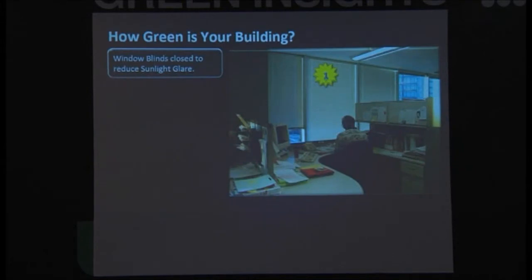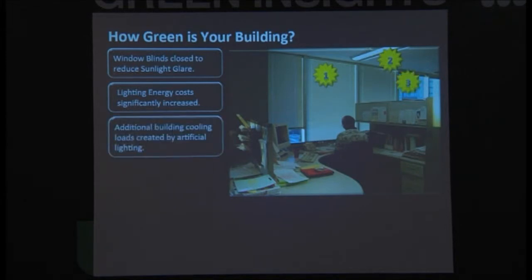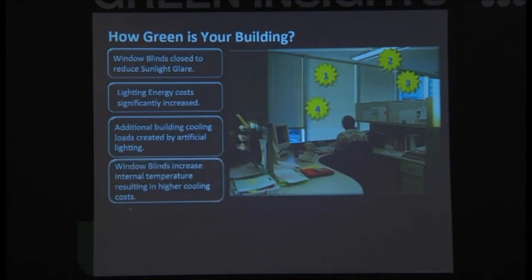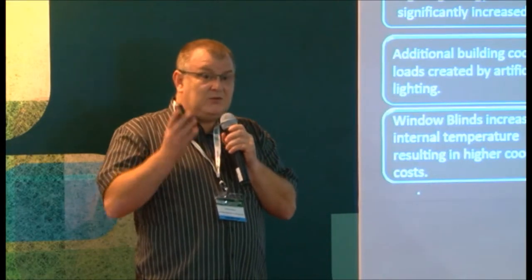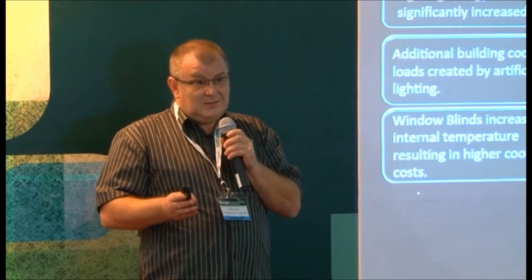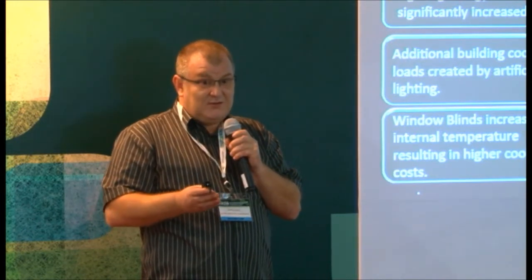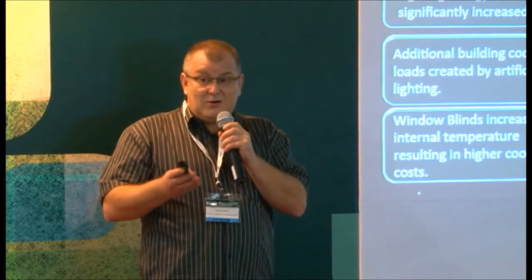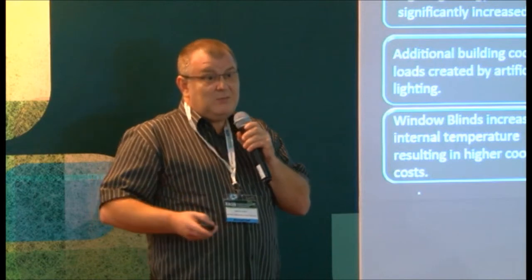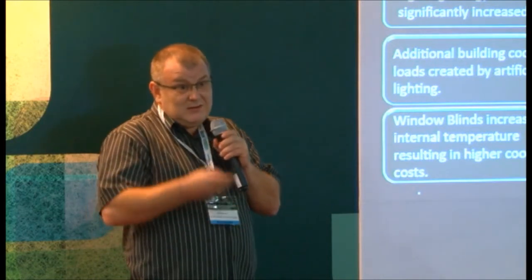So we closed the window blinds to reduce the glare because the glare is the biggest problem. The lighting energy costs are increased because now we've blocked out the sunlight. So there's no point saying this fantastic window allows so many percentage of light transmittance because now we've closed the window blinds. So its percentage transmittance is zero. Additional building cooling loads are created by the artificial lighting. And the window blinds increase the internal temperature. One of the problems with window blinds in Malaysia is when we pull down the window blind, there is air trapped behind that window blind. The sun is still passing through that transparent surface, the glass, and it's warming the air. That air then gets hotter and moves into the space. So it's a bit like boiling a saucepan of water on the stove. Eventually the steam will be generated.